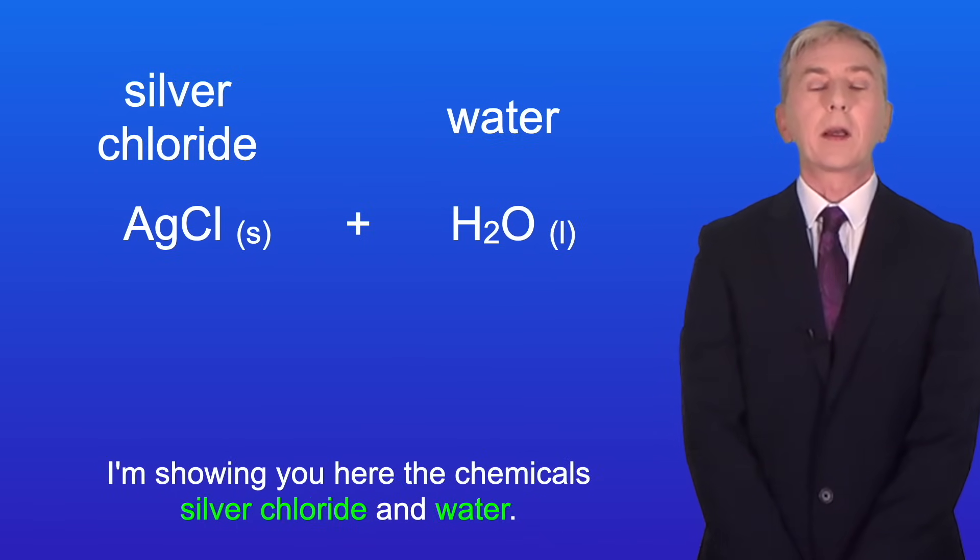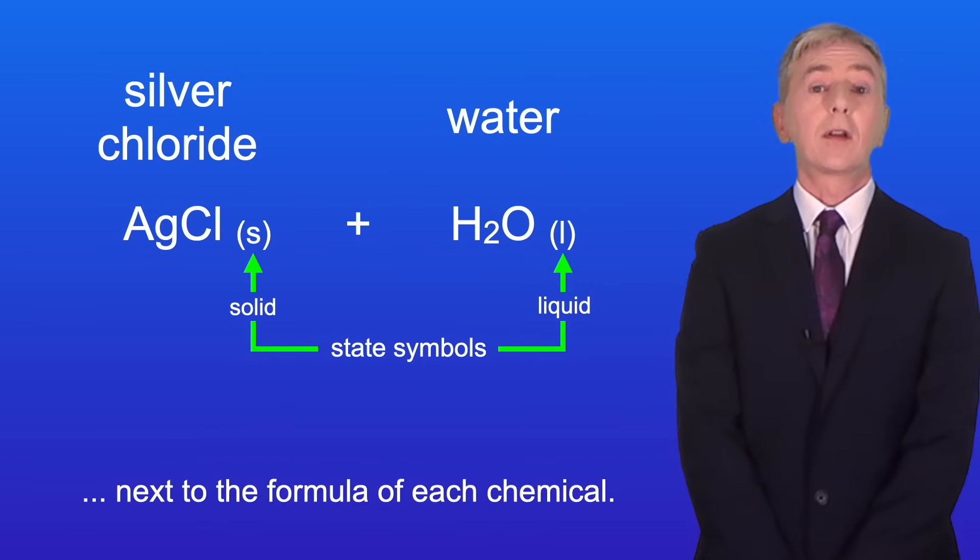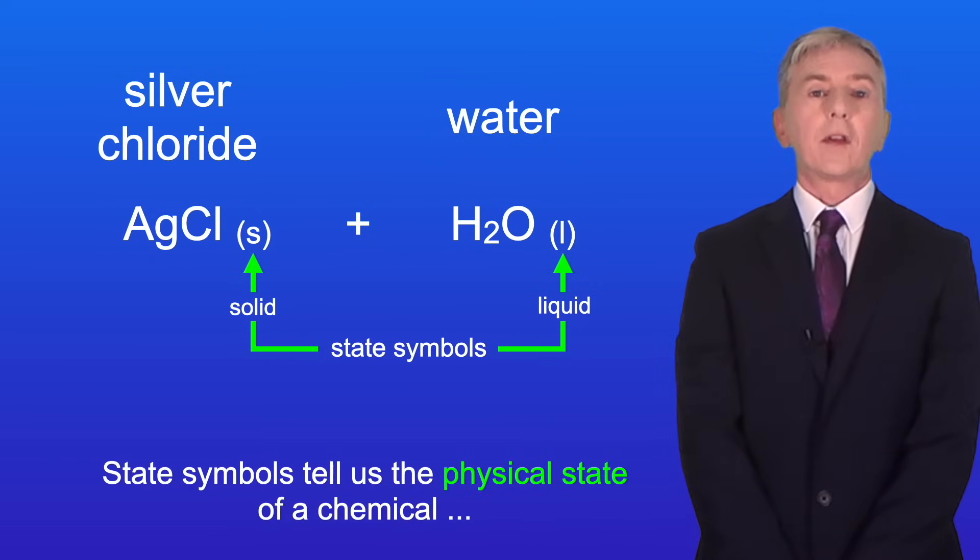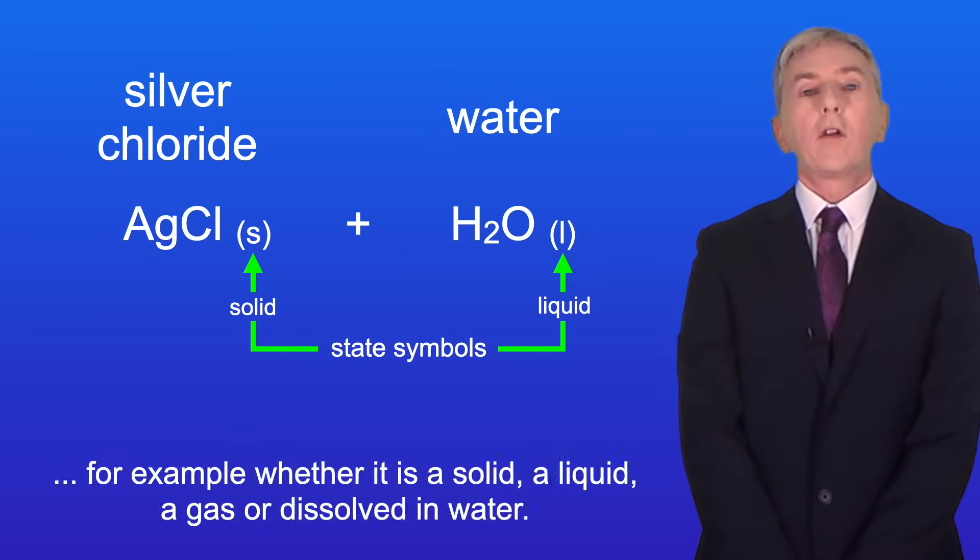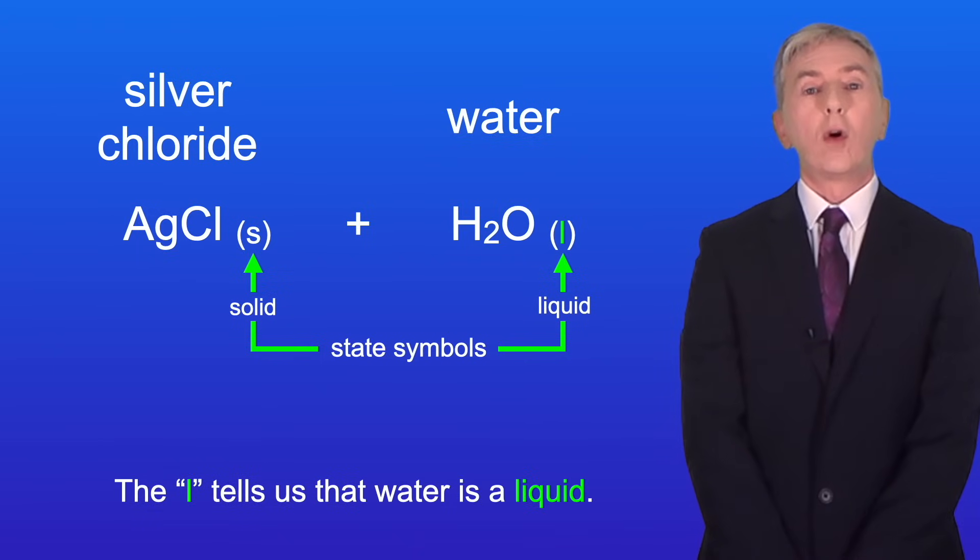I'm showing you here the chemicals silver chloride and water. You'll notice that I've also included lowercase letters next to the formula of each chemical. These are called state symbols. State symbols tell us the physical state of a chemical, for example whether it's a solid, a liquid, a gas or dissolved in water. The S tells us that silver chloride is a solid and the L tells us that water is a liquid.